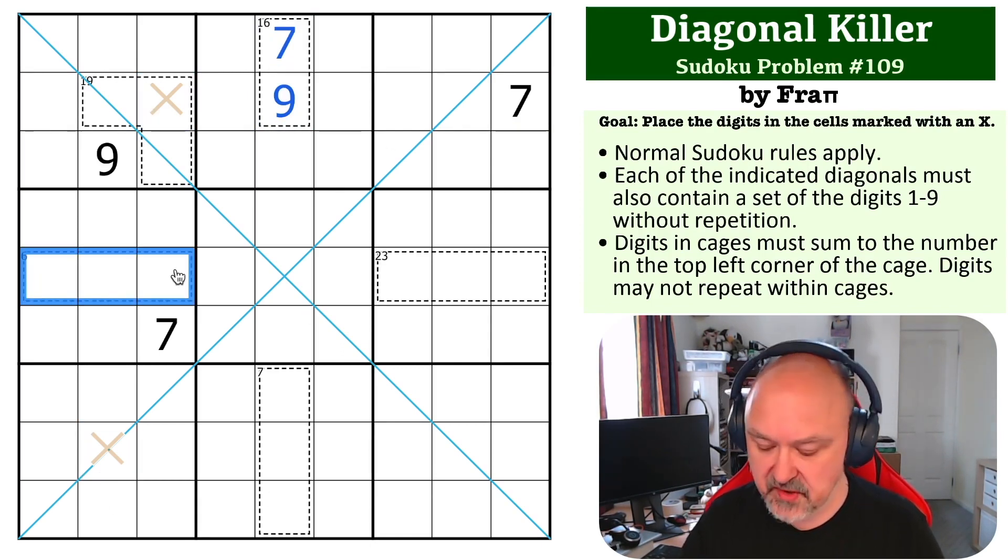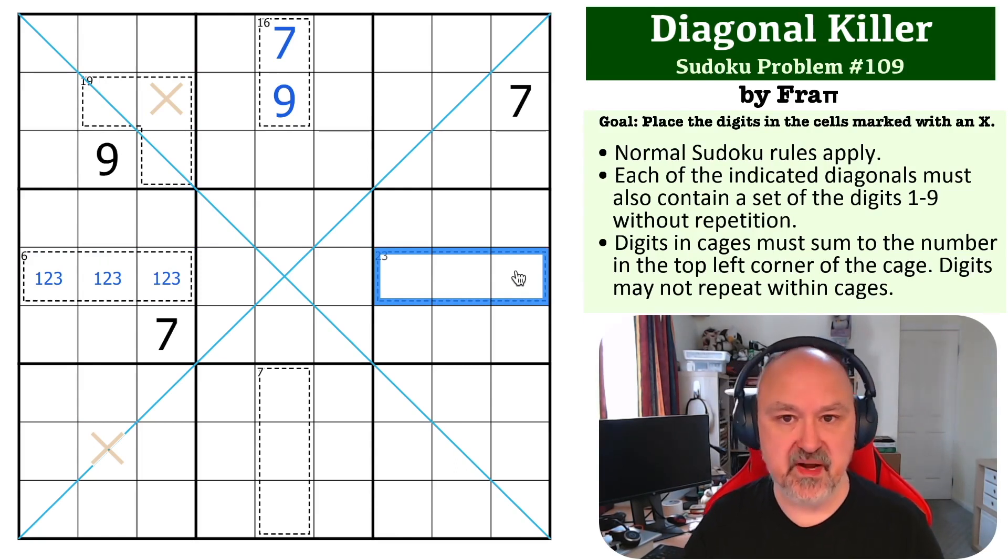So 6 can only be done with 1, 2, 3, and 23, there's only one way to make that, which is the maximum digits you can do is 24 with 7, 8, 9. You can only reduce one of those digits by 1 to get to 23, so this is 6, 8, 9.